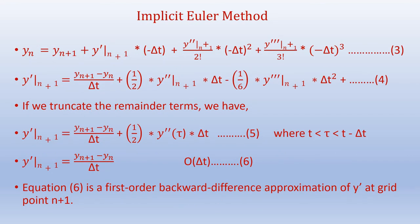We will continue with the Taylor series expansion. Y n equals y n plus 1 plus y dash n plus 1 times negative delta t plus y double dash n plus 1 by 2 factorial times negative delta t whole square, plus y triple dash n plus 1 by 3 factorial times negative delta t whole cube.